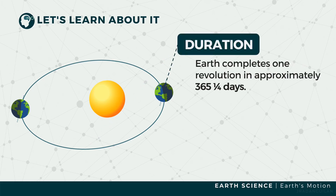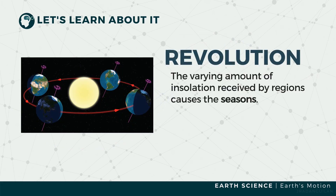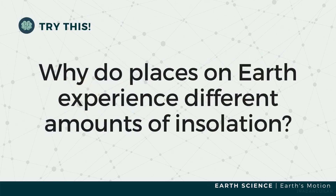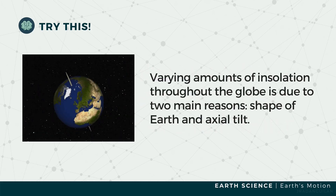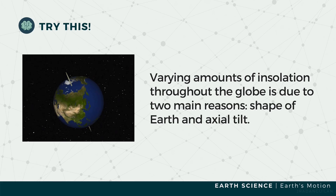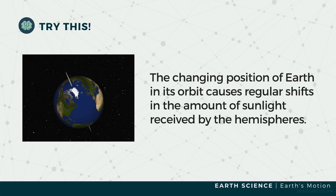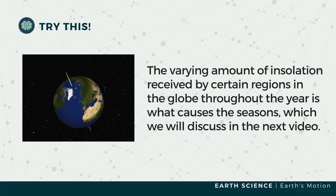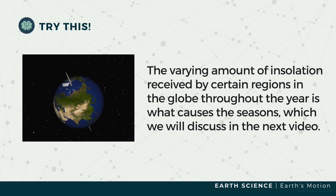The orientation of Earth's axis remains the same throughout the year; thus, the axis points in the same direction as Earth orbits. Earth's revolution changes the part of the surface which is tilted towards the Sun, affecting the insolation and the Sun's distance from the surface. Varying amounts of insolation throughout the globe are due to two main reasons: the shape of the Earth and its axial tilt. The changing position of the Earth in its orbit causes regular shifts in the amount of sunlight received by the hemispheres, and the varying amount of insolation received by a certain region throughout the year is what causes seasons, which will be discussed in the next video.